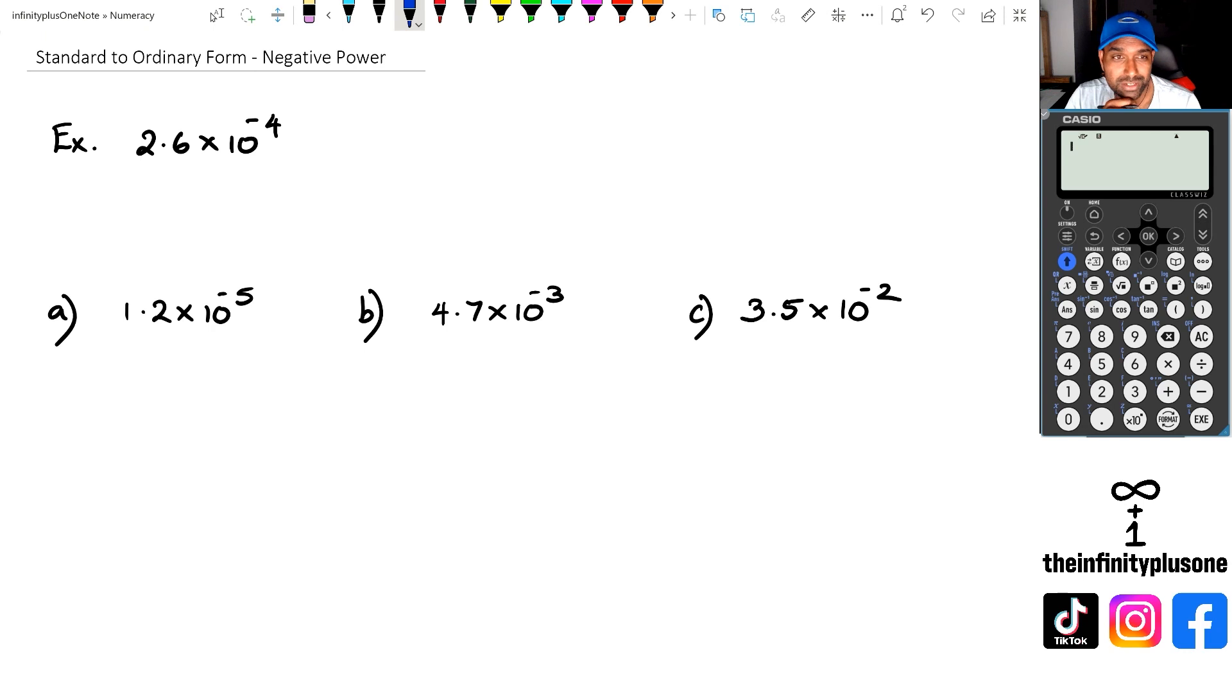So we've got 2.6 times 10 to the power of negative 4. Now if you've been watching my videos, the previous one that we did was with positive power, so we were actually moving the decimal point to the right side. Now this time, what we're going to do is a couple of things. If you ever get in doubt, you're like 'oh I can't remember, do I go right or do I go left?' Well, think about it like this: this number has a negative power. If it has a negative power, that means your number is going to be extremely small. If it has a positive power, then the number is going to be quite large.